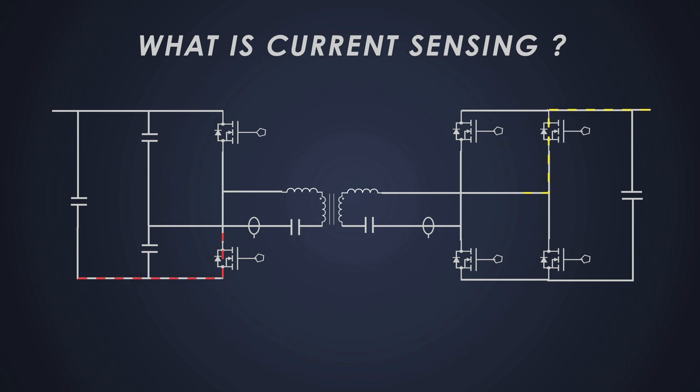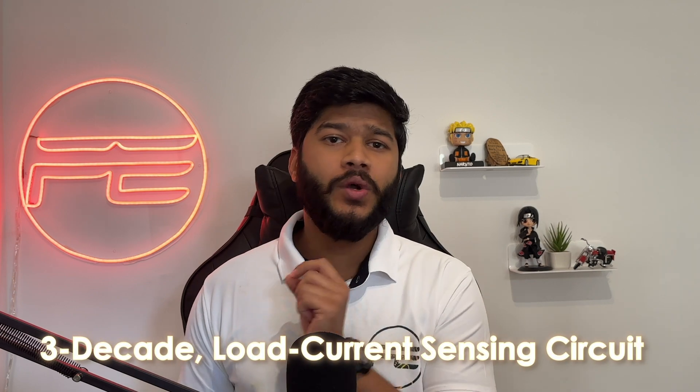Current sensing helps us understand how much current is flowing through a particular part of circuit. Now, why exactly is this circuit called 3-Decade Load Current Sensing Circuit? Well, it refers to the circuit's ability to accurately measure currents over a range spanning 3 decades of magnitude, or decades, of current values.